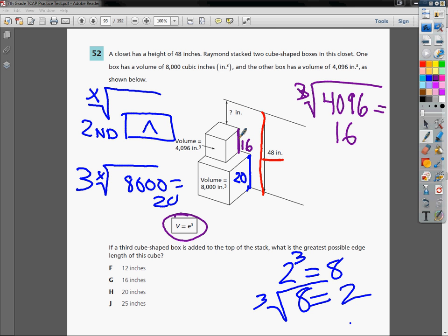All I have to do now, because the question says, if the third cube-shaped box is added to the top of the stack, what is the greatest possible edge length of this cube? What it wants to know is if I have another box, and I'll choose green because why not, if I add another box on top of it, what's the largest distance from here to here? And all I'm going to do is just subtract, because we're only talking about one dimension now. So I'm going to take my 48 from before, I'm going to subtract my 16, and I'm also going to subtract my 20, and I get a final answer of 12 inches.